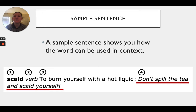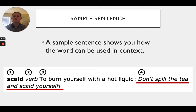Next up is the sample sentence. A sample sentence shows you how the word can be used in context — it tells you how to use the word correctly in a sentence. You might look at the word scald and say you know how to spell it, you know how to pronounce it, and you know it means to burn yourself with a hot liquid, but maybe you're still wondering how to incorporate it into a sentence.